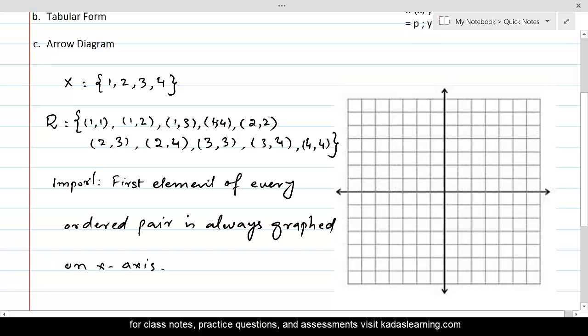So let's write down 1, 2, 3, and 4. So here will be 1, then will be 2, then will be 3, and then will be 4. So these are first elements of the ordered pairs. And now (1,1) will be here. Similarly, you can write 1, 2, 3, and 4 on the y-axis. Here the first pair (1,1) is right here.